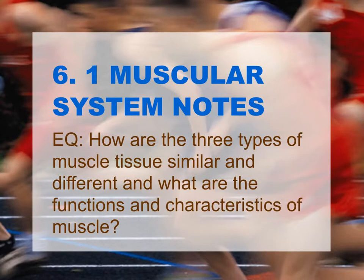This is 6.1 Muscular System Notes. The essential question is: how are the three types of muscular tissue similar and different? And what are the functions and characteristics of muscle?